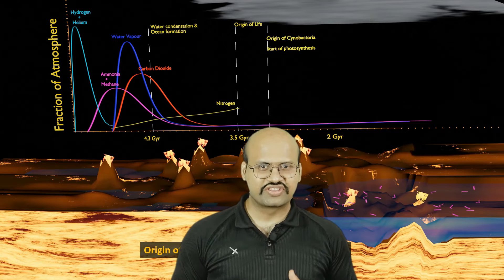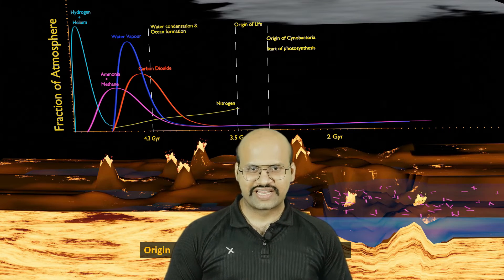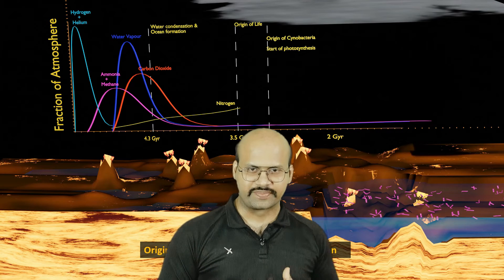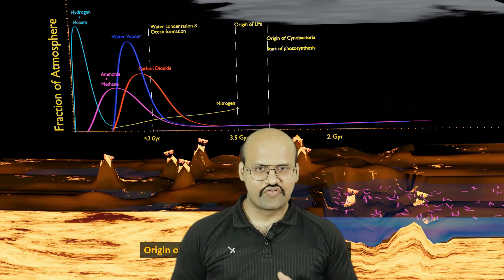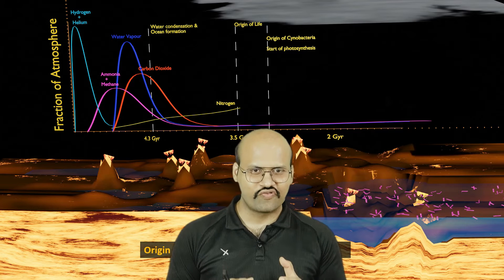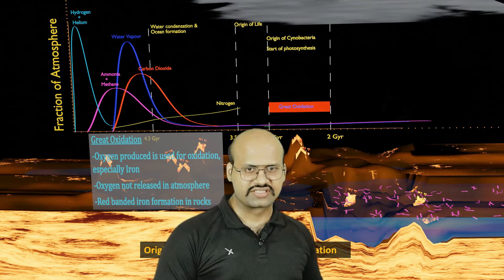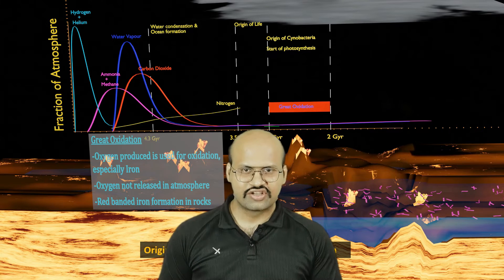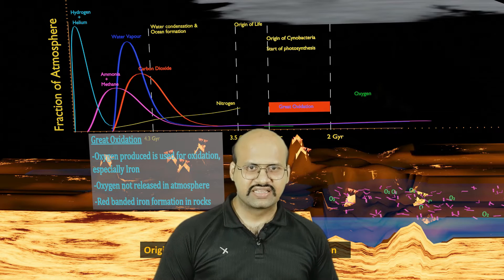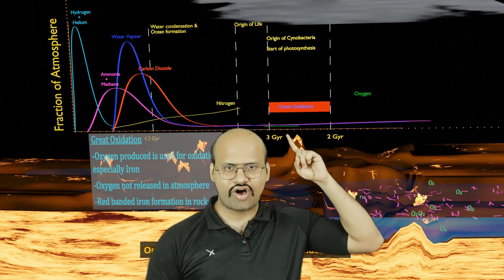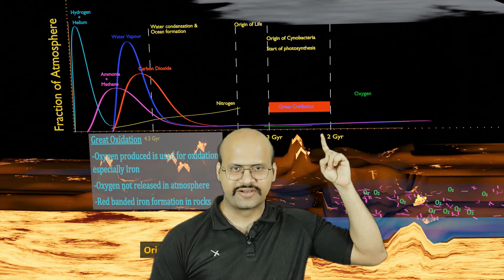Around 3 billion years ago, the first cyanobacteria appeared. These cyanobacteria were able to perform photosynthesis and were present in the oceans. They released oxygen into the atmosphere, but the level of oxygen in the atmosphere did not increase at first.